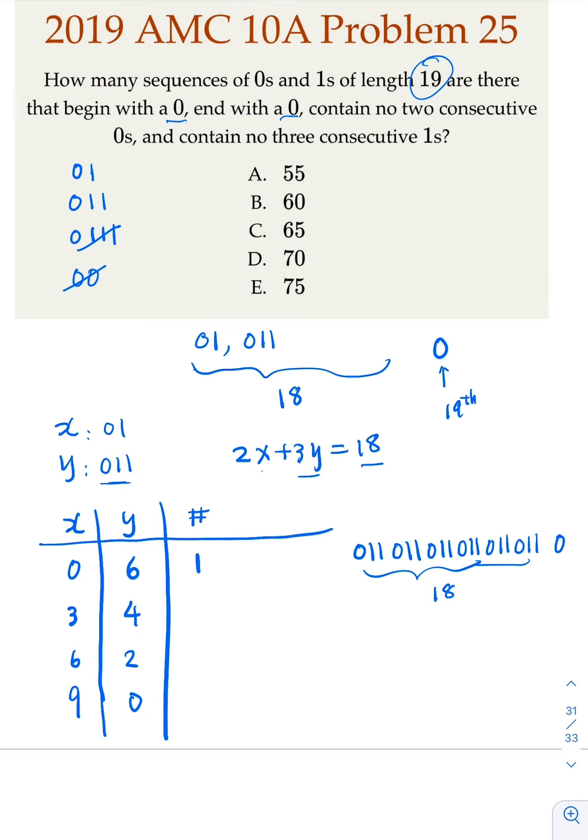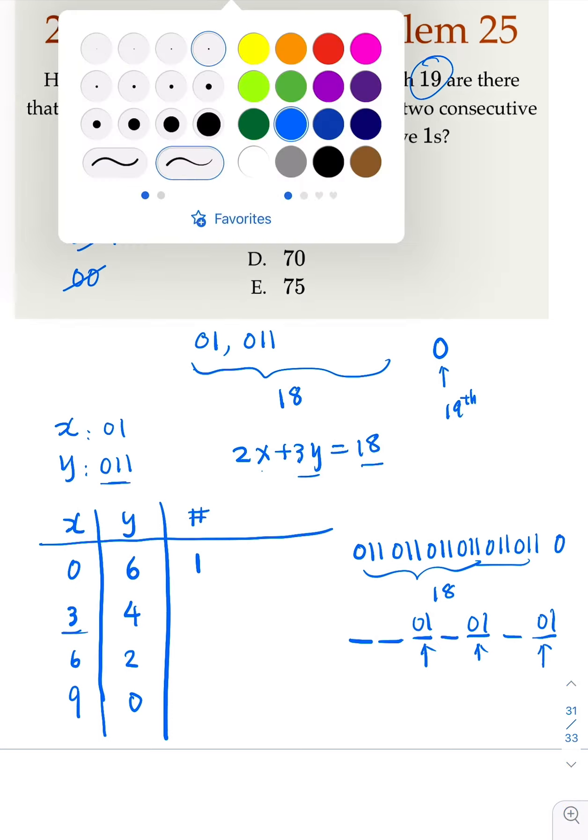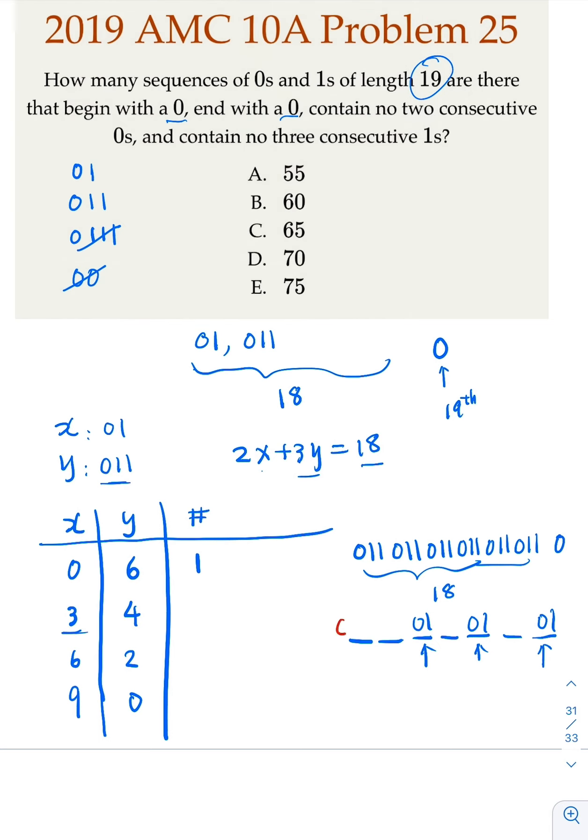Now here, you kind of have 7 positions to choose 3 positions to be x. In other words, you have 1, 2, 3, 4, 5, 6, 7. You pick 3 positions for x, which is 0, 1. And for the rest, you're gonna fill in 0, 1, 1.